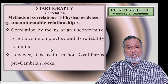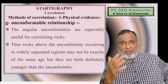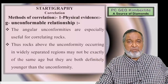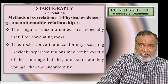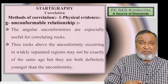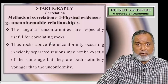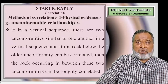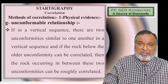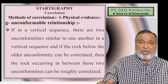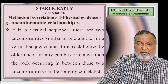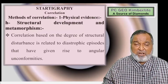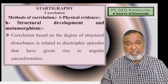The four types of unconformity — angular unconformity, disconformity, local unconformity, and non-conformity — must be identified in both sequences. In a vertical sequence, if the rock below the older unconformity can be correlated, then the rocks occurring between the two unconformities can be roughly correlated. Once one base is confirmed, the rocks above can also be compared and correlated. The concept is that similar unconformities in both sequences help establish the wider geological comparison.